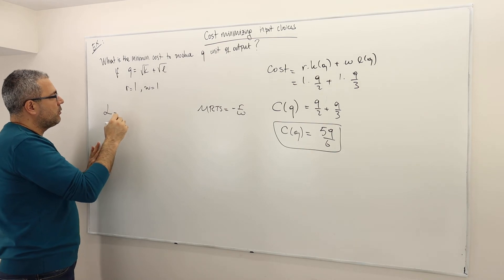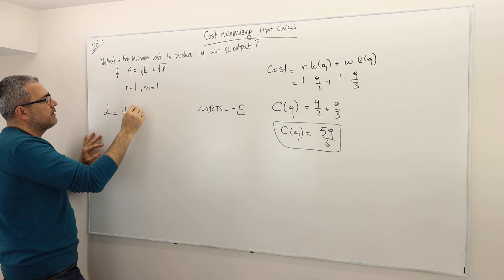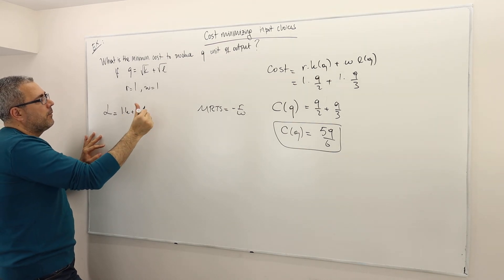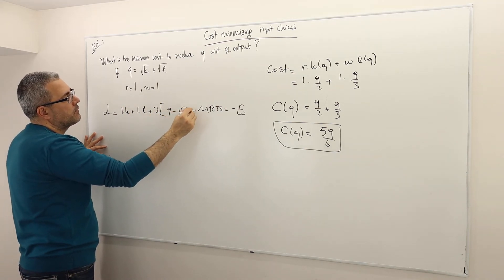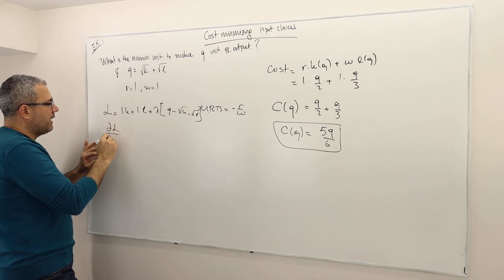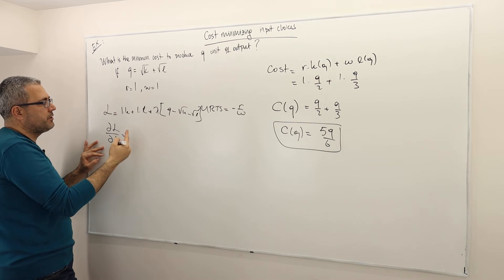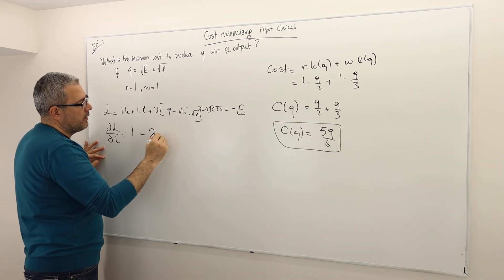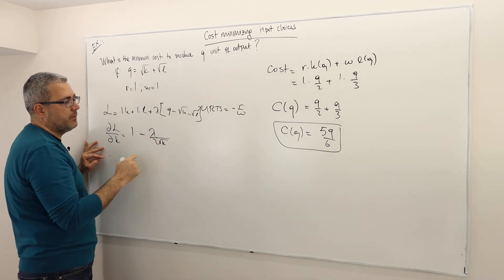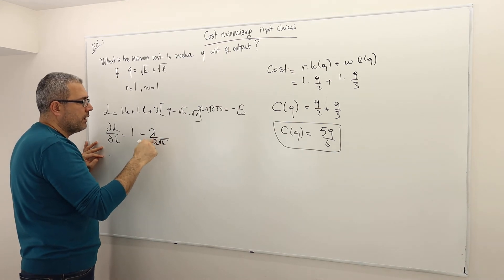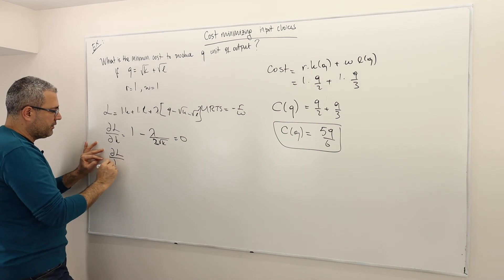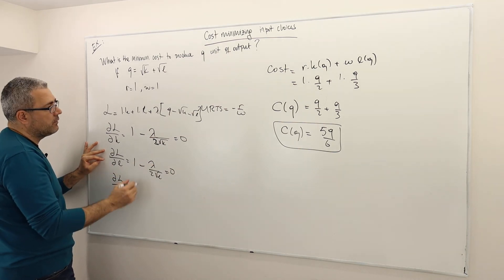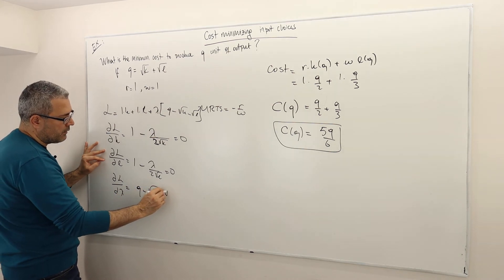The Lagrangian is: minimize cost, which is 1 times K plus 1 times L — the price of capital and price of labor respectively — plus lambda times (Q minus √K minus √L). Taking the partial derivative with respect to K: 1 minus lambda times (1/2) times K^(−1/2) equals 0, i.e., 1 minus lambda divided by 2√K equals 0. With respect to L: 1 minus lambda divided by 2√L equals 0. With respect to lambda: Q minus √K minus √L equals 0.